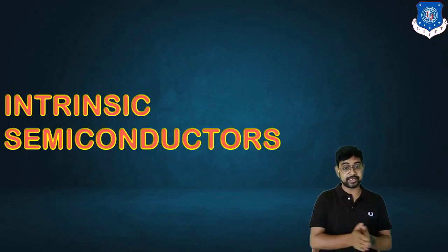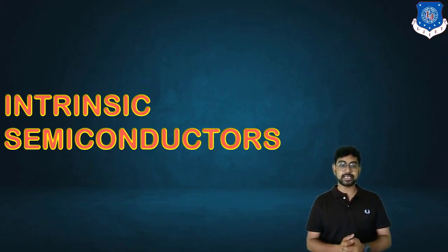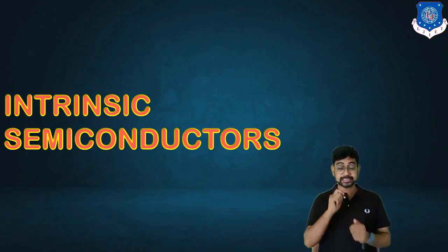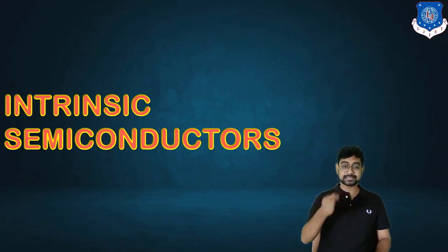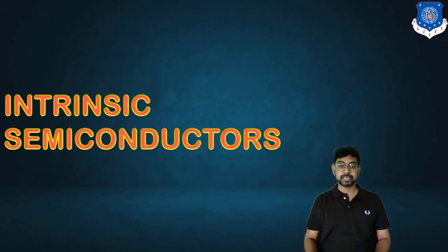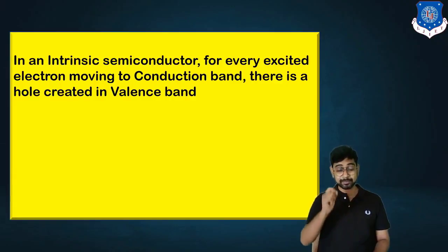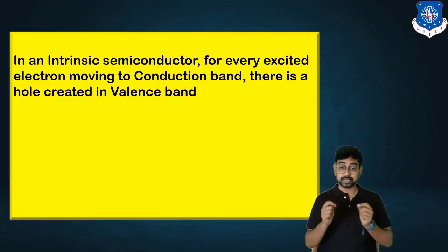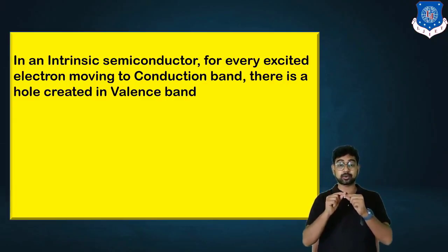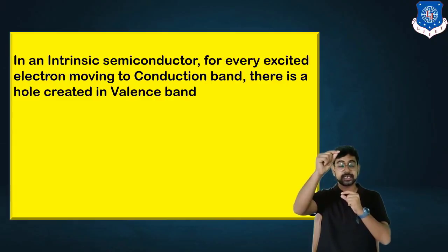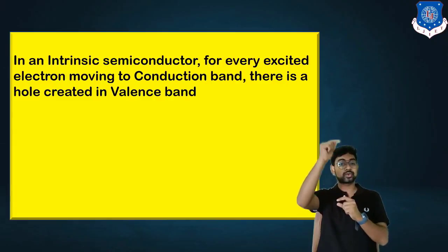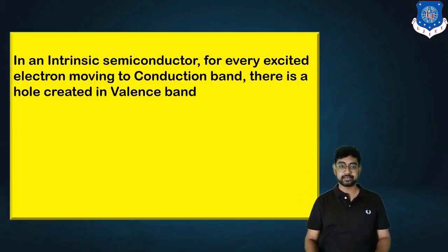We will first take intrinsic semiconductors. In intrinsic semiconductors, we will study the density of electrons in the conduction band, the similar density of holes in the valence band, and the effect of temperature on the Fermi level. In an intrinsic semiconductor, for every excited electron moving to the conduction band, there is the same amount of holes created in the valence band — because there is no impurity. Whatever electrons go from the valence band to the conduction band, that deficiency is created.